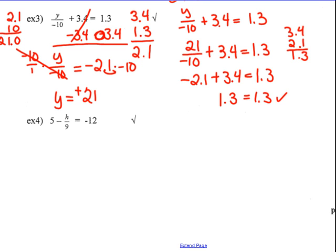Last one, number 4: 5 take away h divided by 9 equals negative 12. I have a division and an adding of positive 5 — don't think that's minusing 5. In front of that 5 is a positive sign. It's like adding 5 to the division of h divided by that negative 9. So I'm going to subtract 5 on both sides first. My positive 5 and negative 5 cancel. I bring down my division of negative h over 9 — that sign left makes it negative h over 9. On the right: negative 12 and negative 5 — same signs, add and keep — that's negative 17.